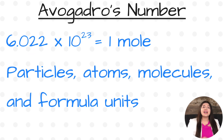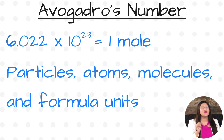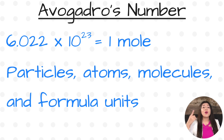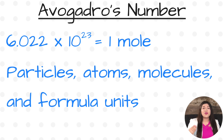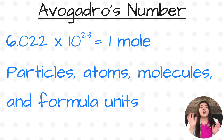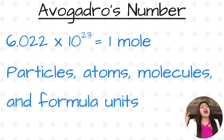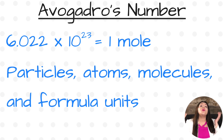The second type is Avogadro's number. Avogadro's number is 6.022 times 10 to the 23rd. That number goes with particles, molecules, atoms, and formula units, and it's all equal to one mole. You know to use this whenever you're going from particles, molecules, atoms, and formula units to moles.